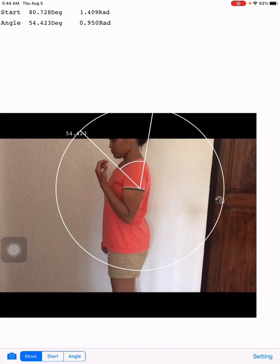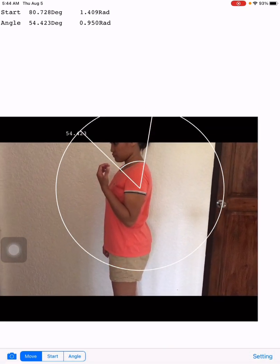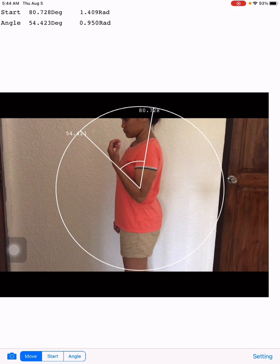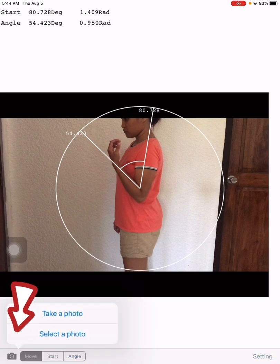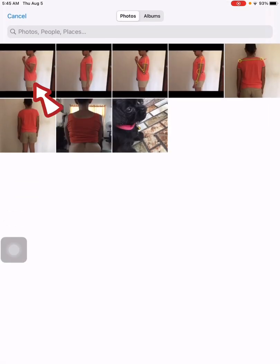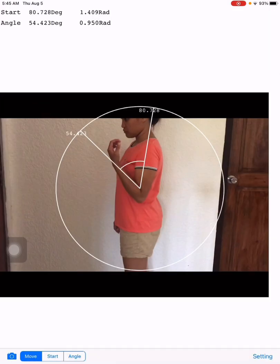I have paused the video onto elbow flexion. What I did here is I click on the camera button on the lower left side and then I selected the photo. I've already have this elbow flexion image.